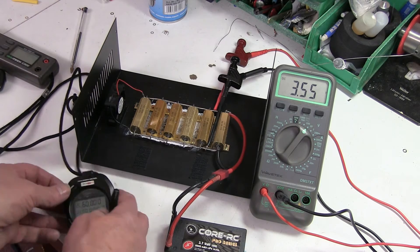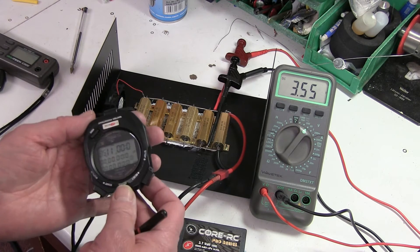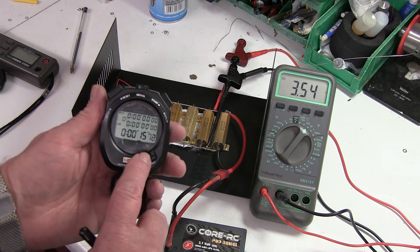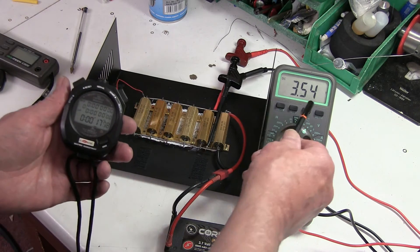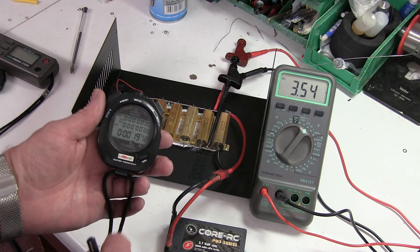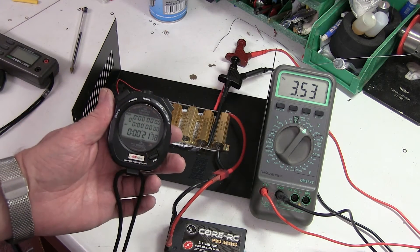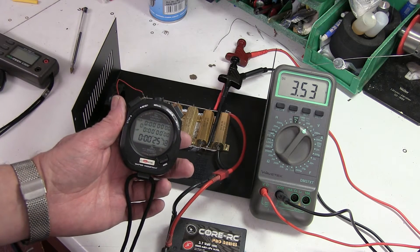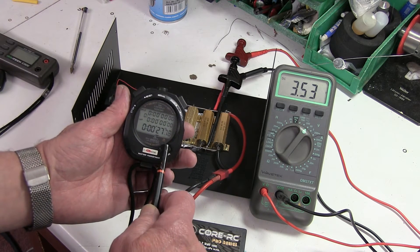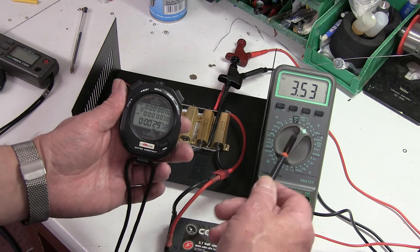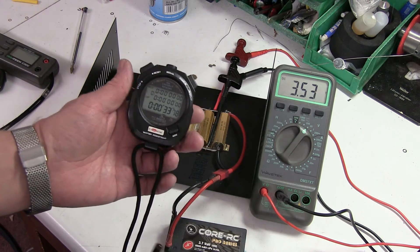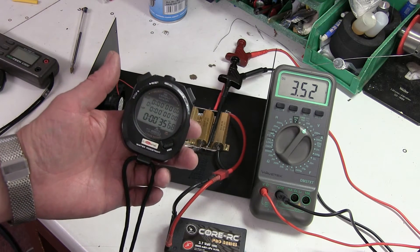And then as the stopwatch is going, as soon as it hits say 15 seconds, get a reading - 3.54. And then you can read it off at 30 seconds, so it's just coming up now, and it's just 3.53, and just keep going until you've got all your readings.